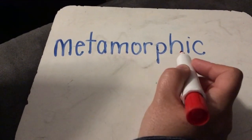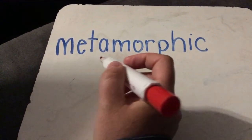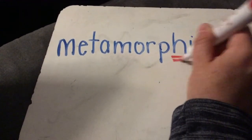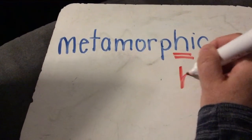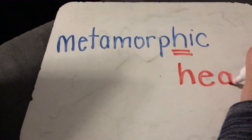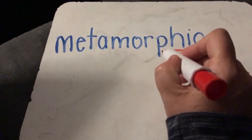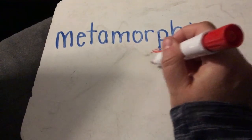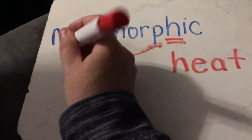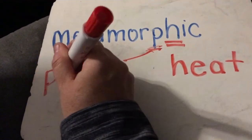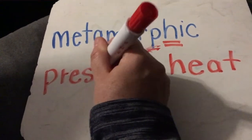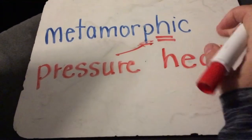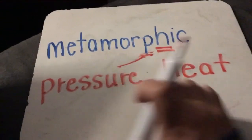The word metamorphic is having to do with change of form — rock formed by great heat and pressure. Metamorphic rocks are having to do with the change of form from great heat and pressure.